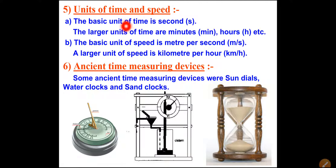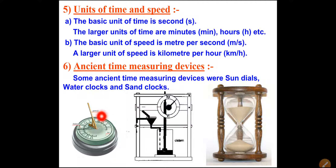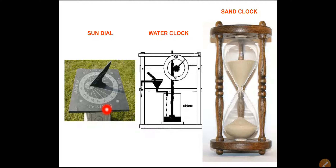In the ancient period, different devices were used to measure time. Some ancient time-measuring devices are shown here: sundials, water clocks, and sand clocks. The sundial, water clock, and sand clock are the devices which were used to measure time in the ancient period.